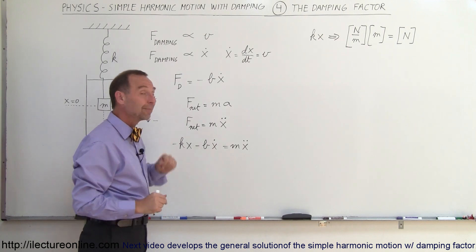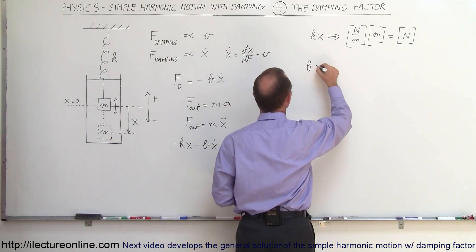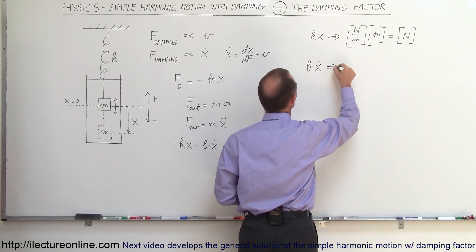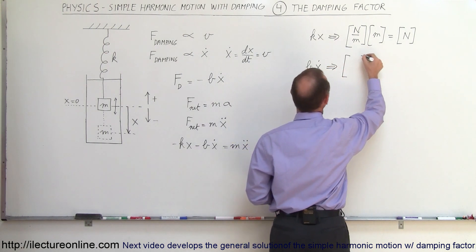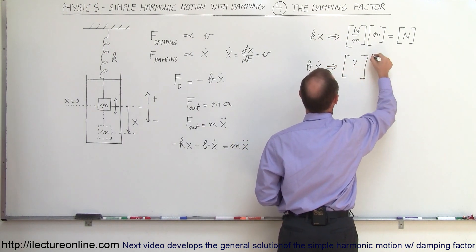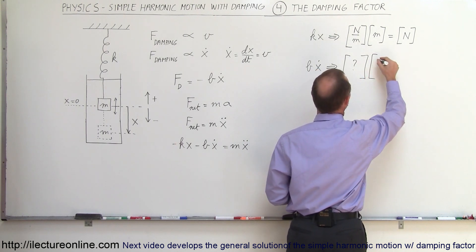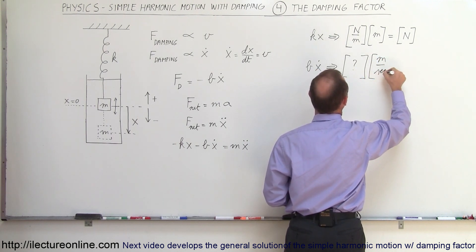So what about b times x dot? We don't know what the units for b should be, so we'll just put a question mark there. The units for x dot, which is velocity, would be meters per second.